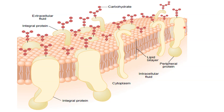In between the lipid bilayer, there are proteins either traversing throughout the bilayer — these are called integral proteins. When you try to take out this protein, the membrane will rupture. Some proteins are located only on the periphery or inside the cell — these are called peripheral proteins. Peripheral proteins can easily be taken out. Along with the proteins, carbohydrates are either directly attached to the membrane or combined with proteins making glycoproteins or proteoglycans.